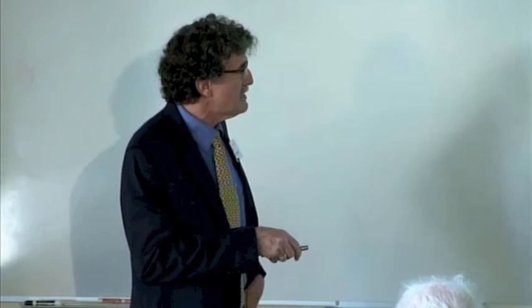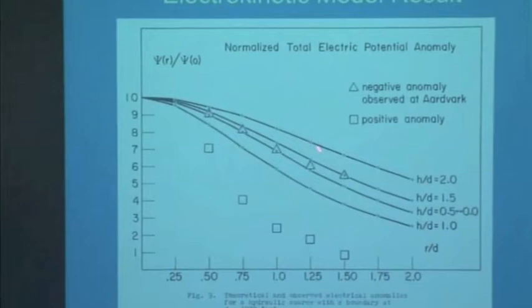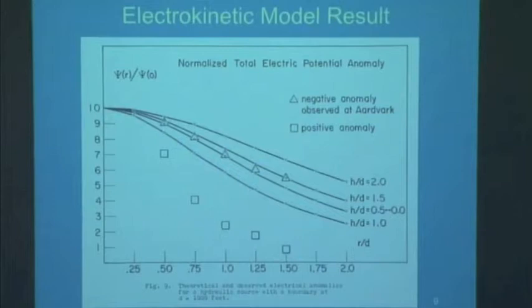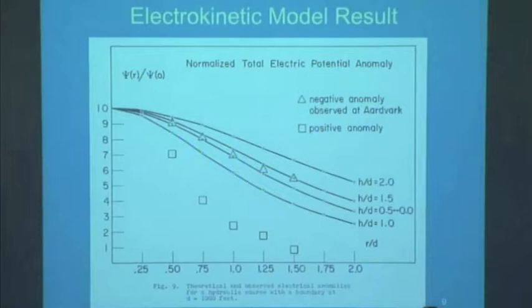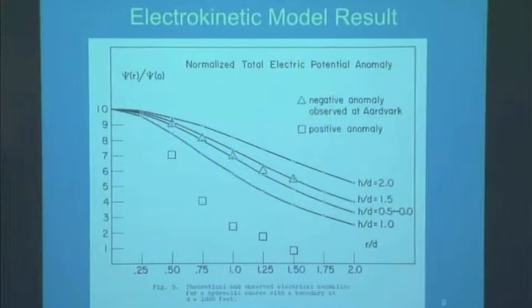He was able to fit this to his model. These were the data from the negative peak, the long recovery, and the parameters that he got agreed fairly well with what they knew about the test site. The ones from the positive anomaly didn't fit very well, as you'd sort of expect, because the geometry was not this spherical geometry. The pressure was going up through some sort of a cracking area rising to the surface, and so it was more complicated.